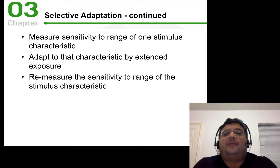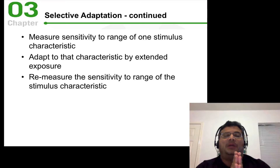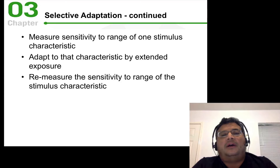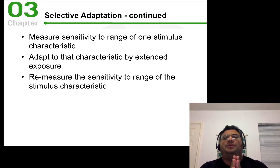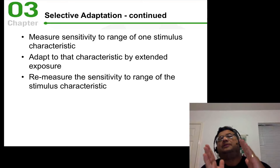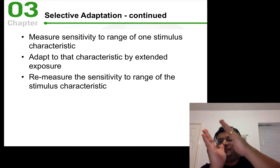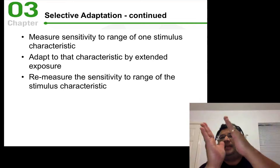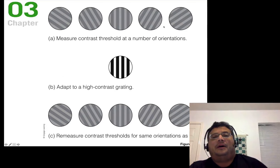Selective adaptation gives us a great way to measure the sensitivity to one stimulus characteristic. We first check how well you can detect a certain characteristic — for example, what direction bars are oriented — then we expose you to those bars for a very long time to adapt the responsible neurons, and afterward we measure sensitivity again to see how well you can detect that particular stimulus.